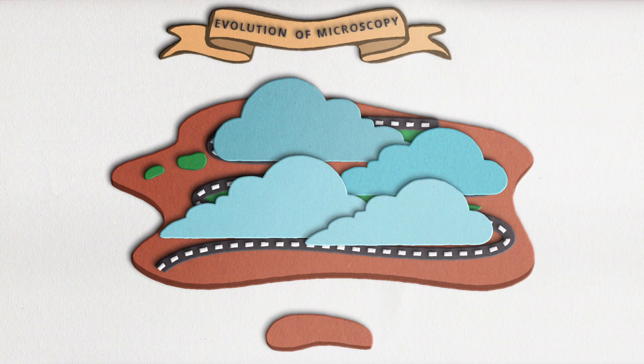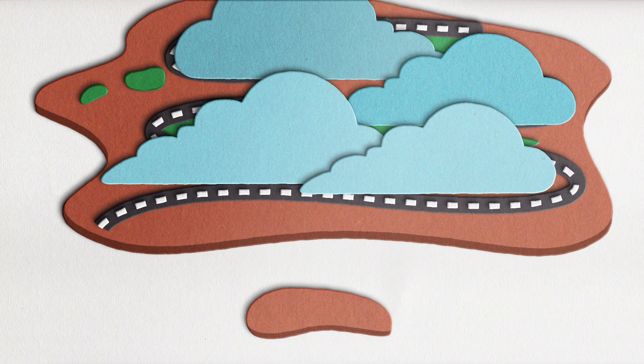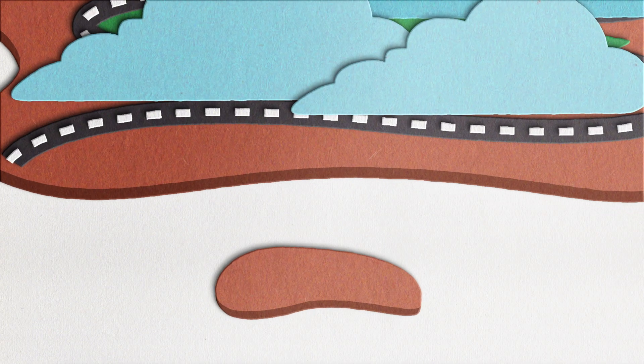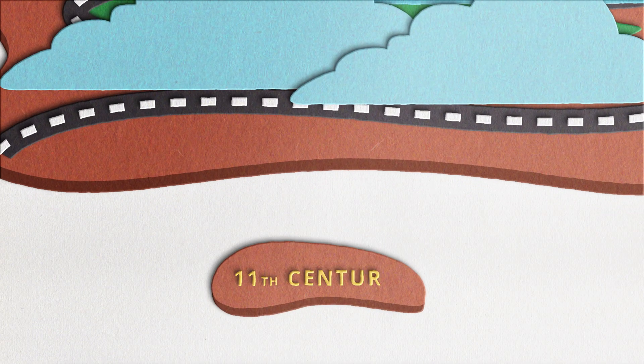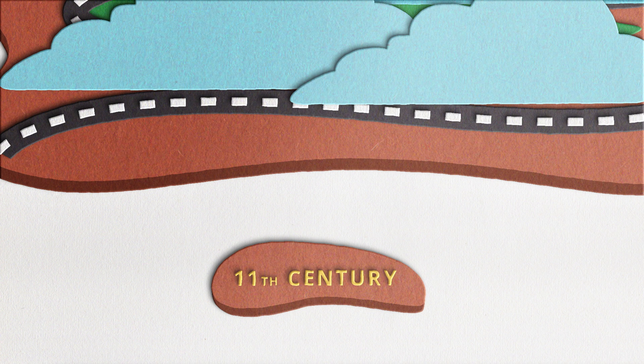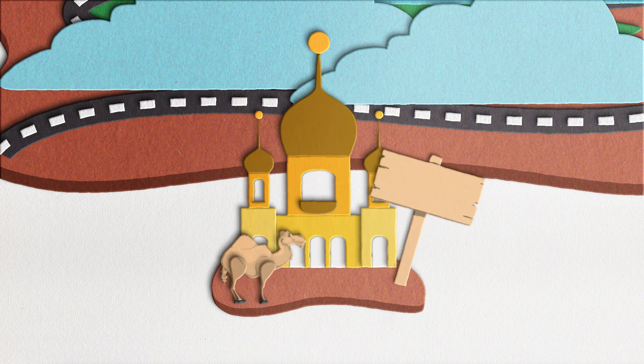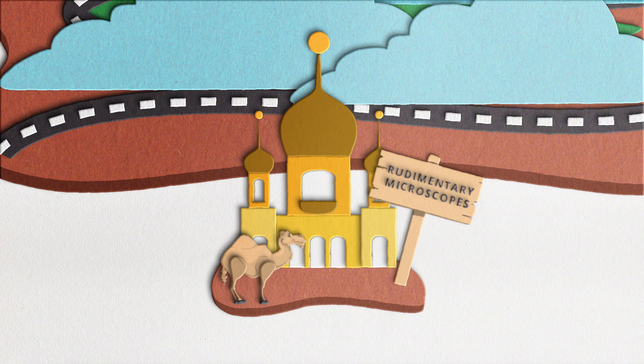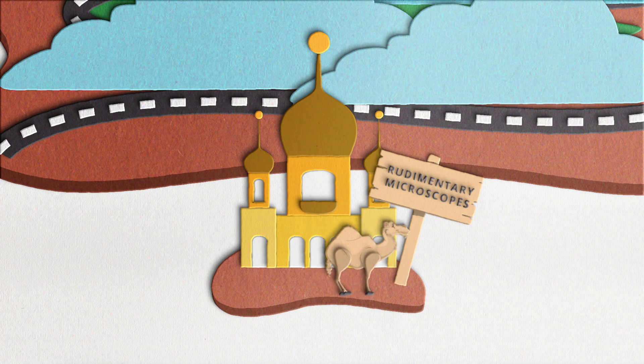The invention of the microscope started much sooner than you think, as far back as the 11th century. When Europe was still deep into the dark ages, people in the Arab world were using rudimentary microscopes to magnify manuscripts. Note, however, that at this point in history, microscopes were still far from entering the realm of science.